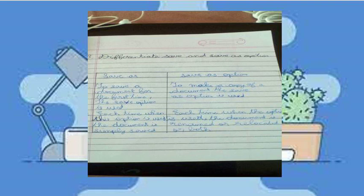Different Save and Save As Options. To save the document for the first time, the Save option is used. Each time when this option is used, the document is simply saved.